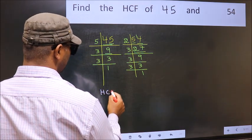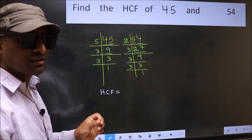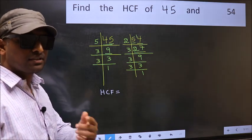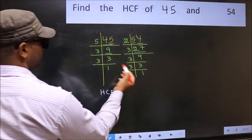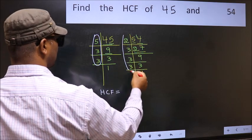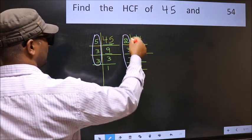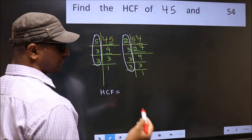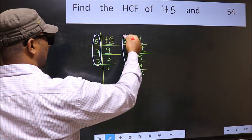Therefore, our HCF is the product of the numbers which should be present in these two places. That is here and also here. Here and here. So now let us find the numbers which should be present here and here.